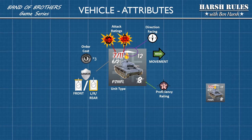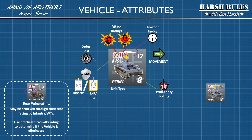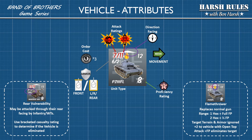Finally, vehicles have an armor rating. The number before the slash shows the front armor; the number after the slash shows the left, right, and rear armor. If you see the armor rating has a black border, it means the vehicle has rear vulnerability — it is susceptible to attack from the rear by infantry and weapons teams, and you will need to use the special bracketed number to determine if the vehicle is eliminated in an attack.